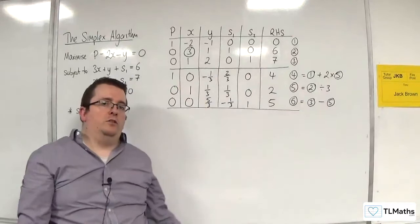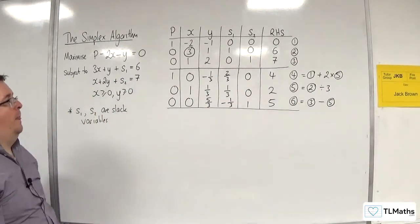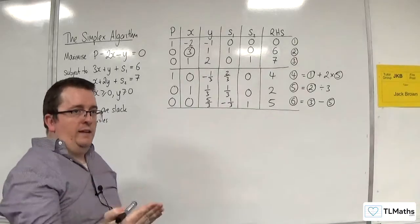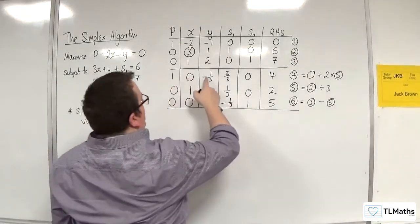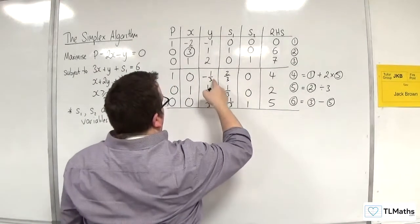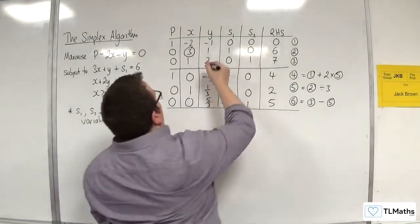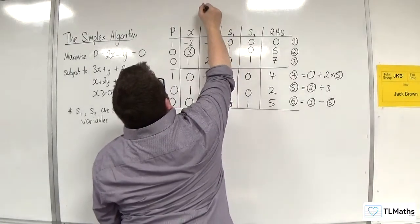Now, have I got to my optimum solution? The answer to that is no. And the way that you can recognize that is because there is still a negative in the top row there. So that means that Y, that column, now becomes my new pivot column.